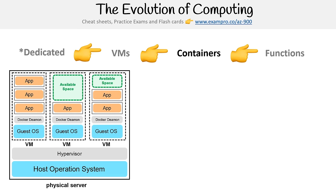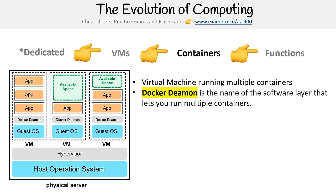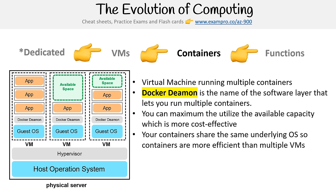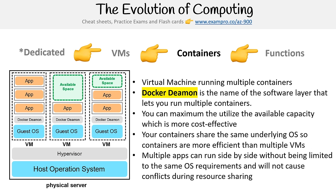Containers take it a step further — within virtual machines, we run multiple containers, further subdividing how we run applications. The technology used to run containers is Docker (Docker Daemon). This lets you run multiple containers and maximize the utility of available capacity, making it extremely cost effective. Containers share the same underlying OS, so they're more efficient than multiple VMs. The great thing is that each container can technically be running a different OS, giving you a lot more flexibility.